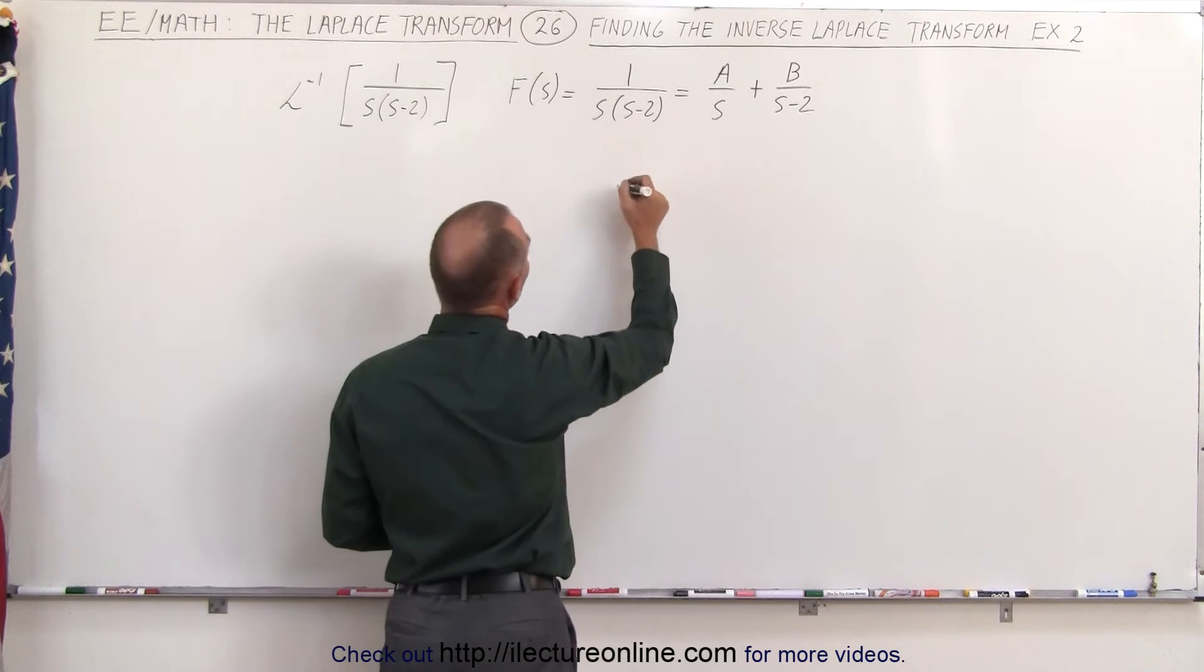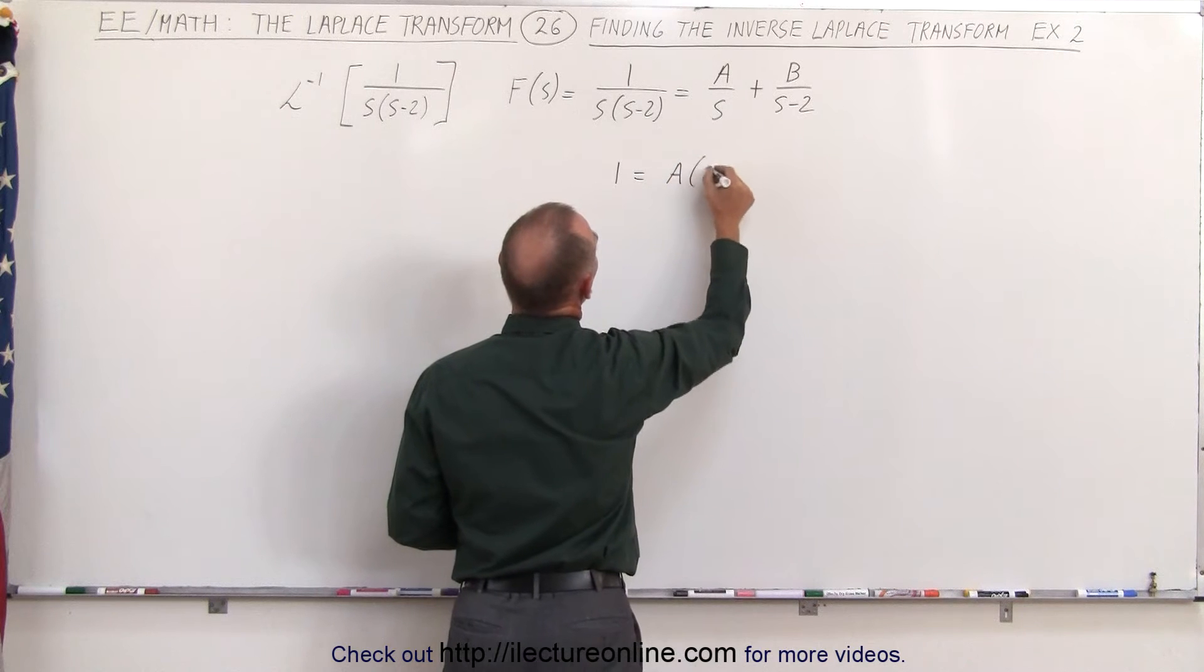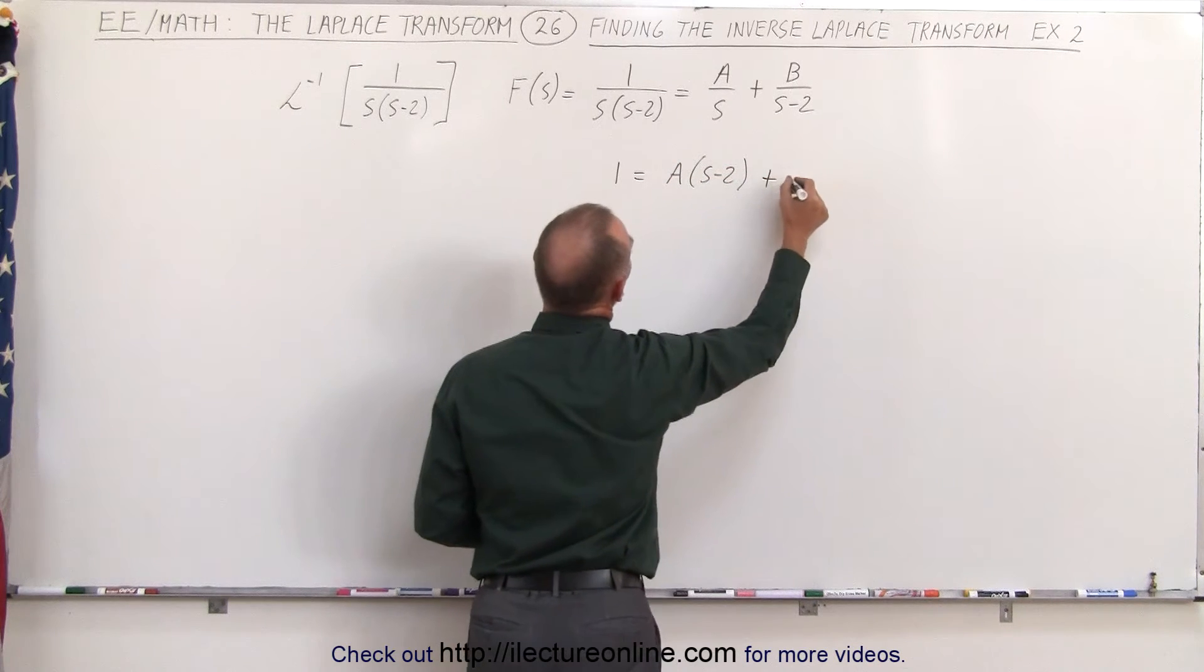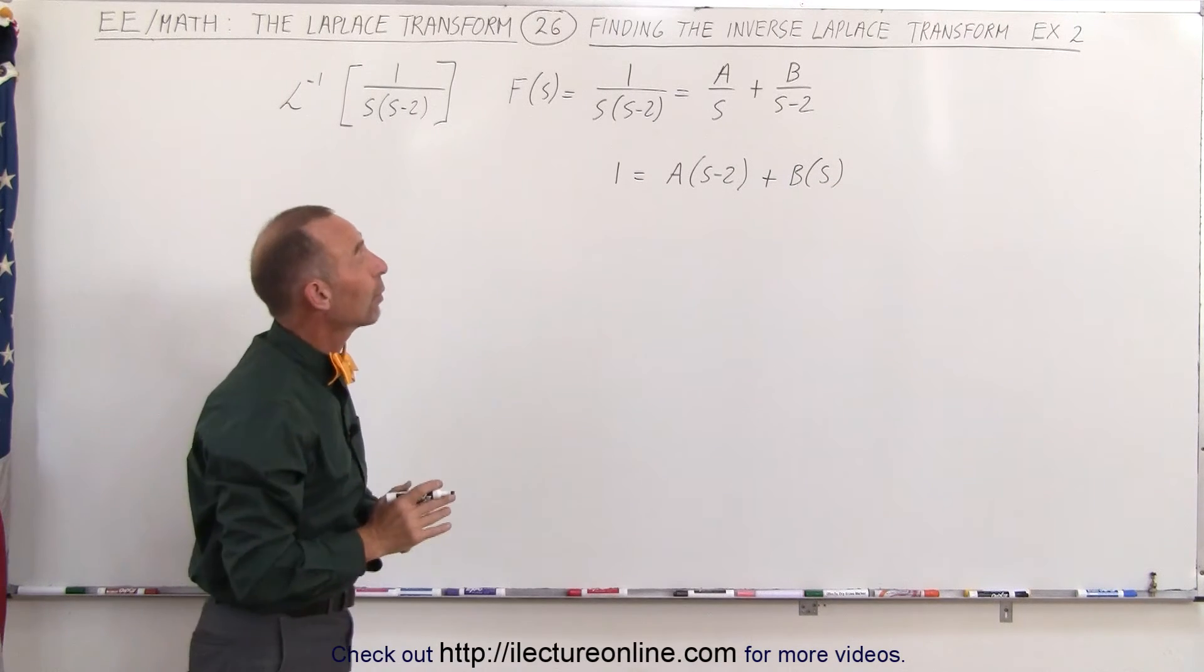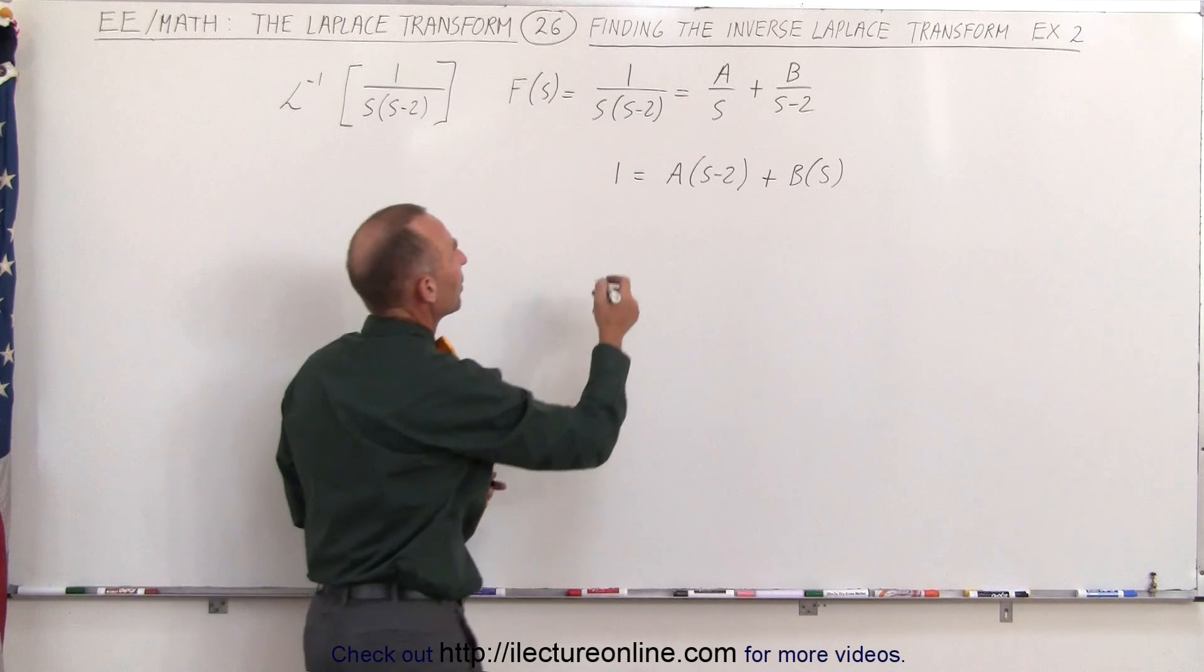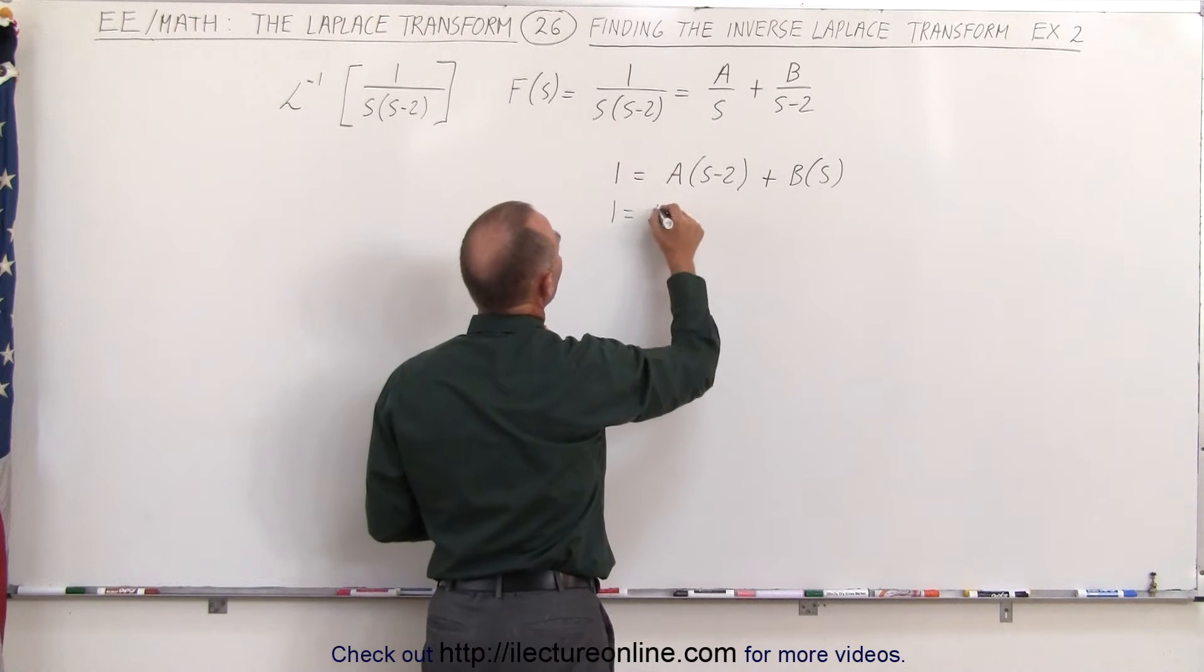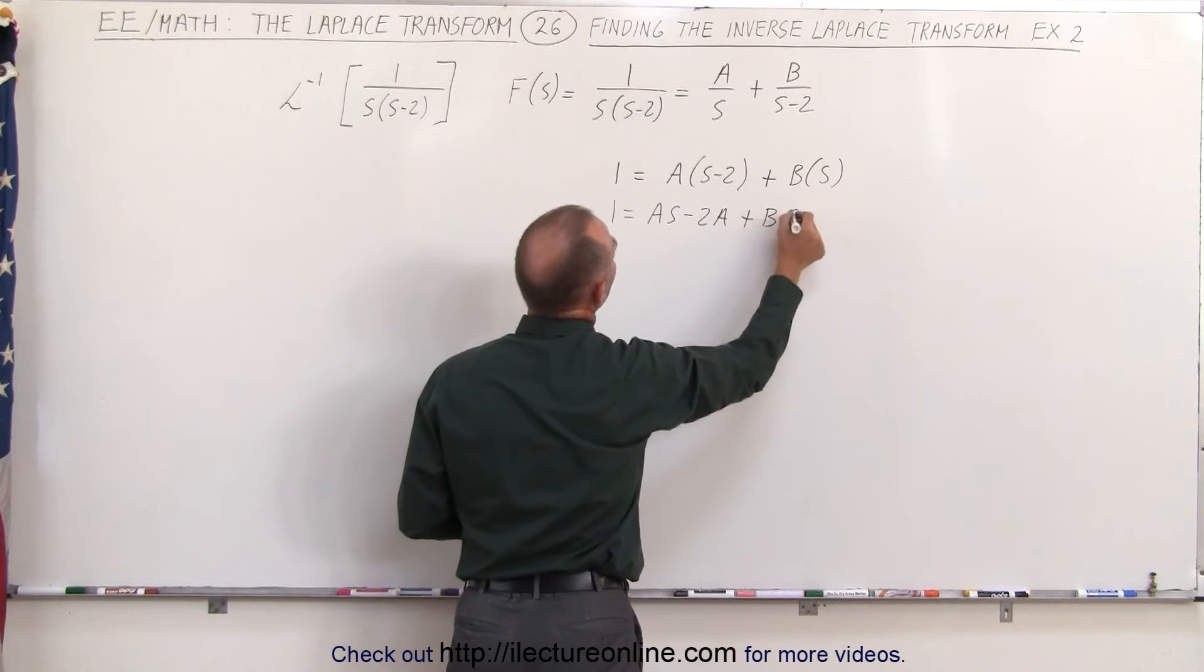When I do that I get the following: I get 1 is equal to a times s minus 2 plus b times s. So what I did here is simply multiply both sides of the equation by s times s minus 2. Working that a little bit more I get 1 is equal to as minus 2a plus bs.